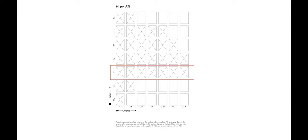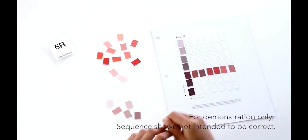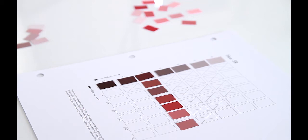Next, at each value level, build out horizontally from the lowest chroma to the strongest chroma.